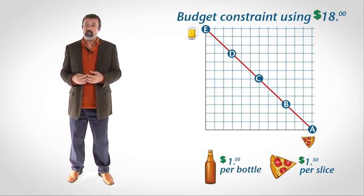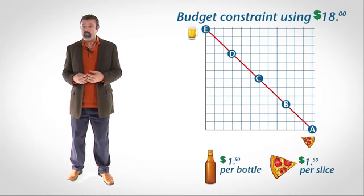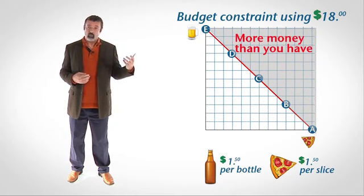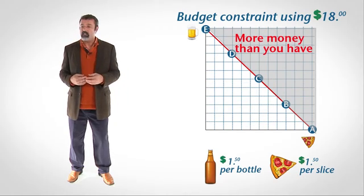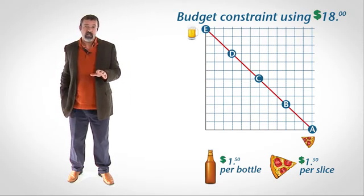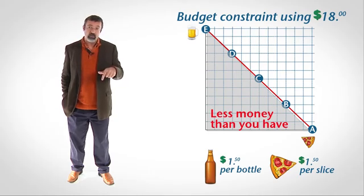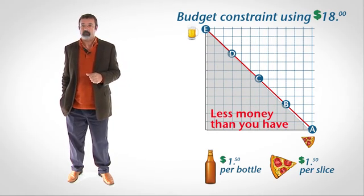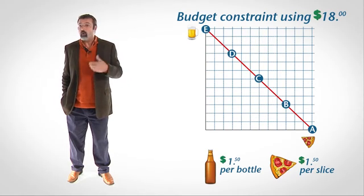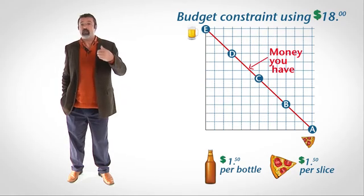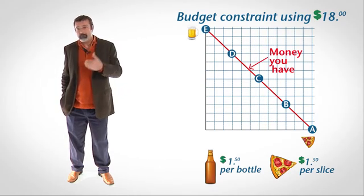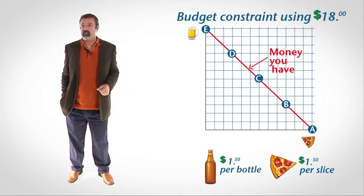All combinations of beer and pizza above and to the right of the line cost more money than you have. All combinations of beer and pizza below the line cost less money than you have. All combinations of beer and pizza along the line cost exactly the amount of money you have to spend.